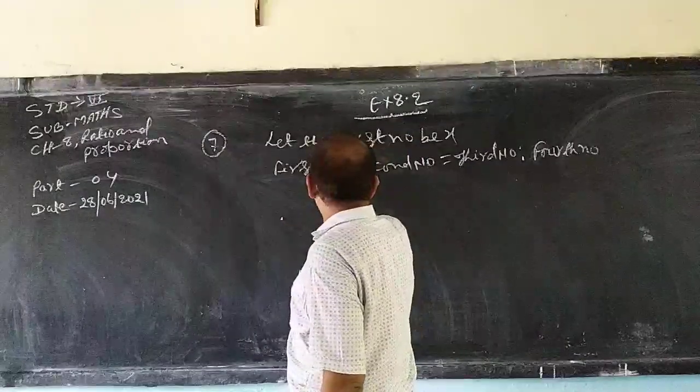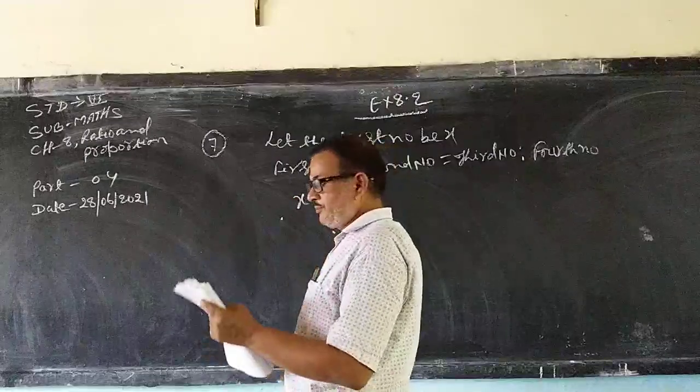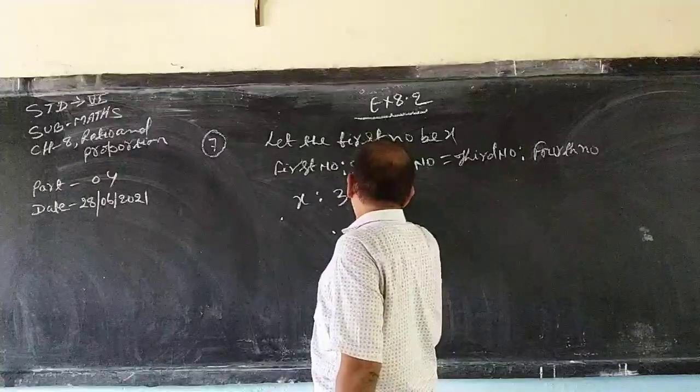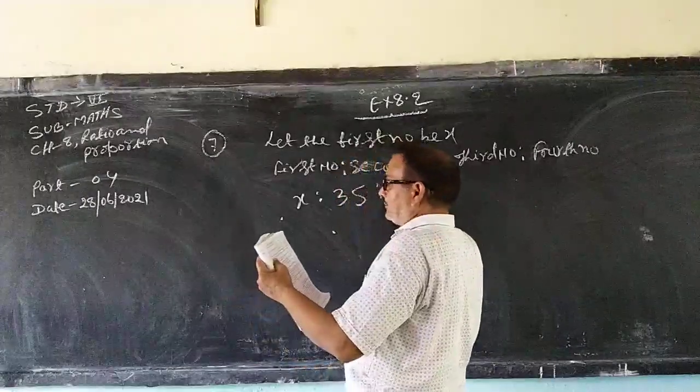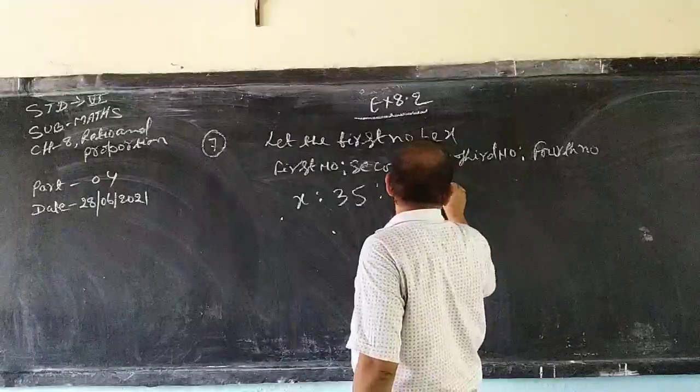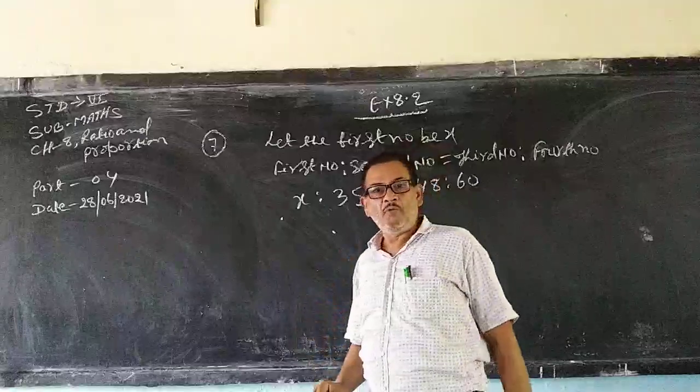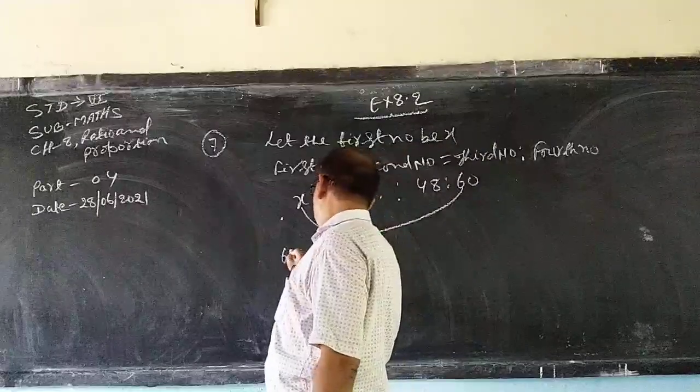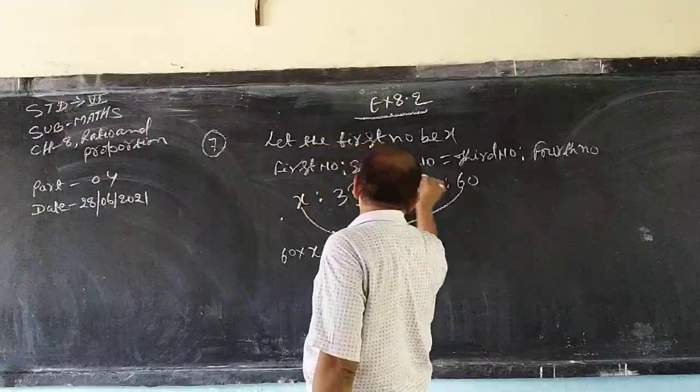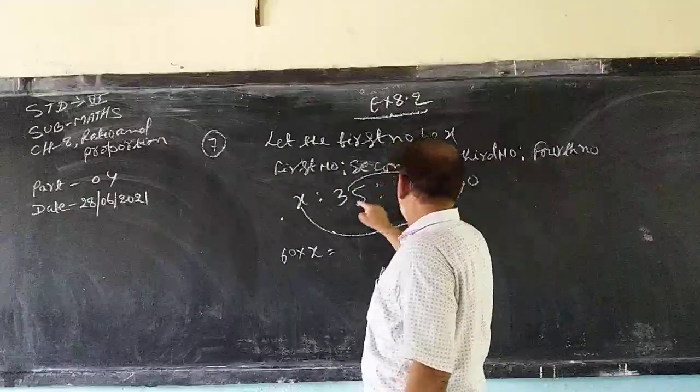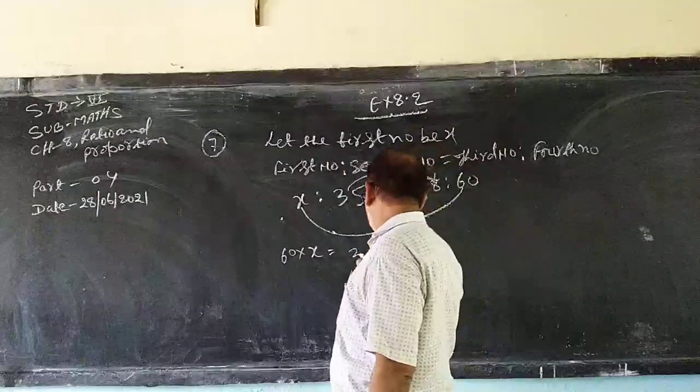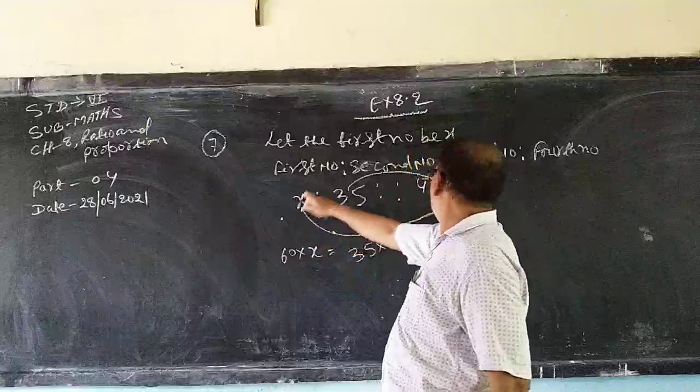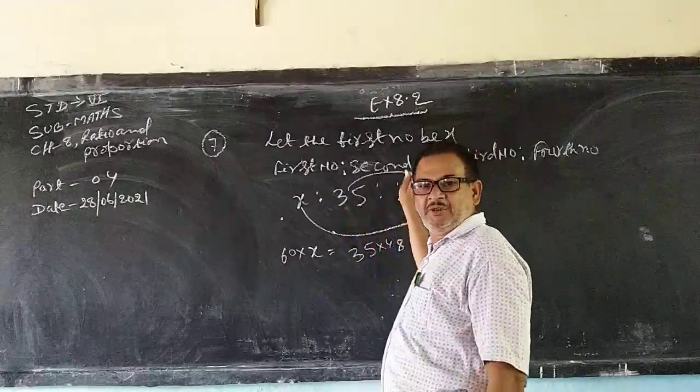x ratio second number is given 25, so you can write it proportional to third voltage ratio 60. See this one, what I have given. First term into last term means 60 into x is equal to the mean proportion, that is second term into third term, 35 into 48. First term into last term, second term into third term.